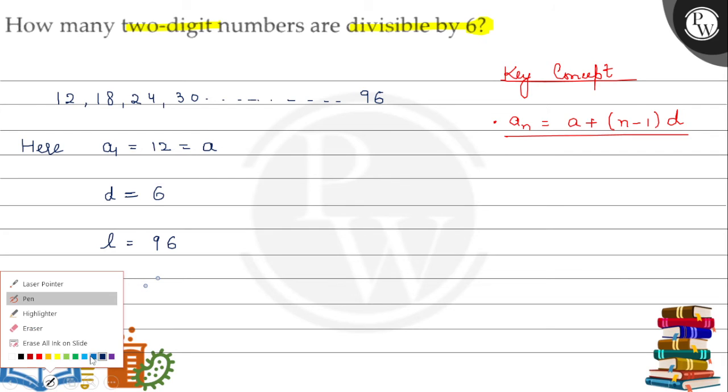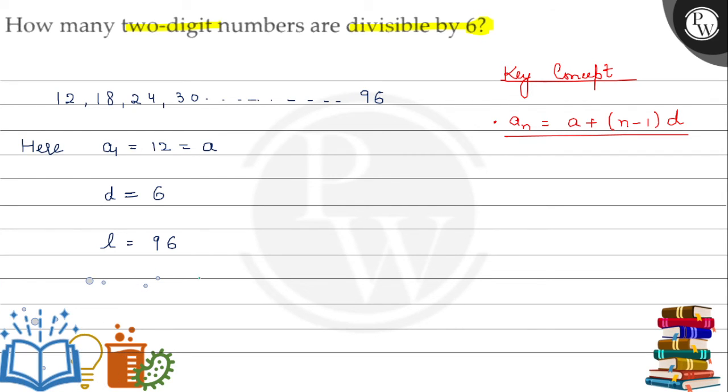We know that l equals a plus (n-1) times d. So l is 96, the last two-digit number. Putting the values: 96 equals 12 plus (n-1) times 6.